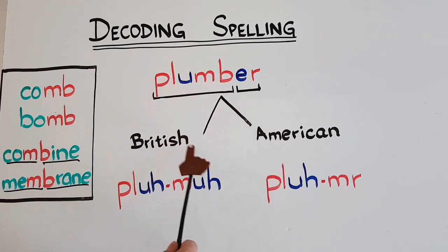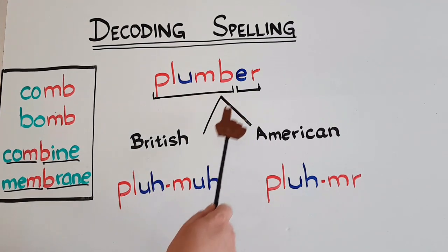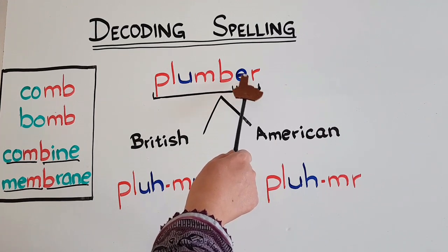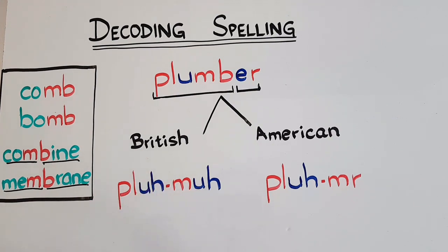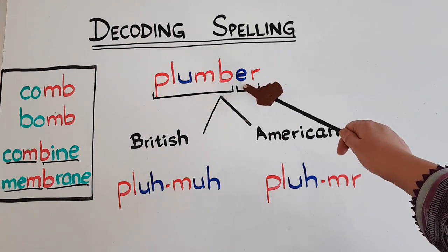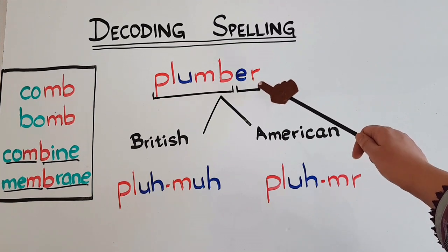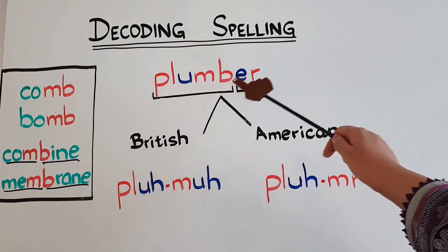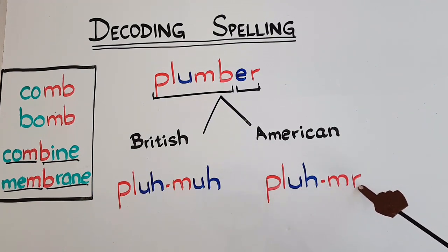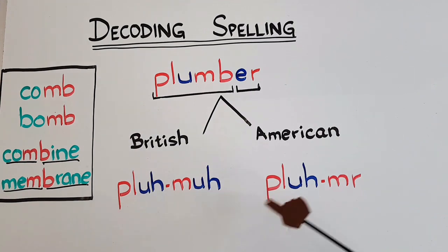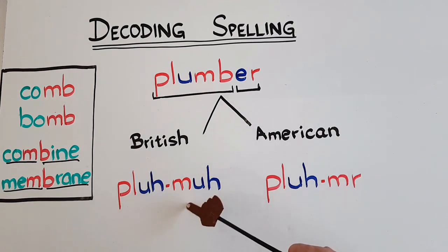Let's see the British and American pronunciation of this word. In British pronunciation, this word is 'plumber,' because we do not pronounce R when followed by a vowel in British English - it's a schwa sound. In American English, we follow the bossy R rule, so we pronounce the UR sound and say 'plumber.' So British: 'plumber,' American: 'plumber.'